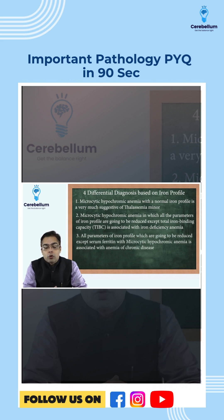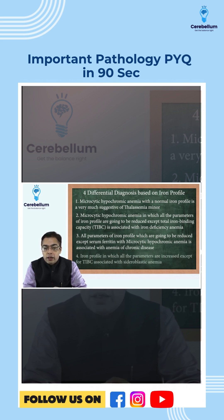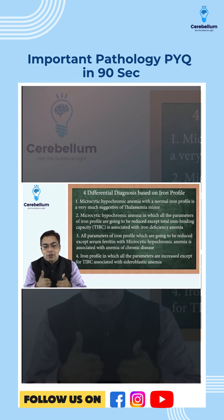All parameters of the iron profile which are going to be reduced except serum ferritin with microcytic hypochromic anemia is associated with anemia of chronic disease. And when we are talking about an iron profile in which all the parameters are increased except TIBC, that is associated with sideroblastic anemia. Hope this helps you in the exam. Best wishes.